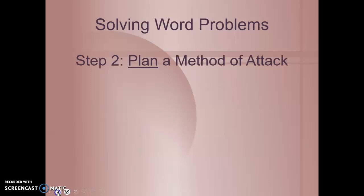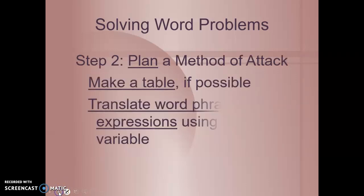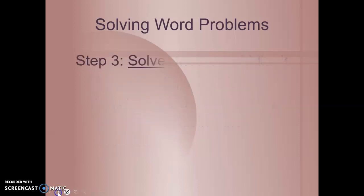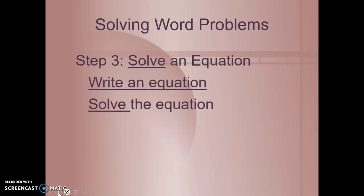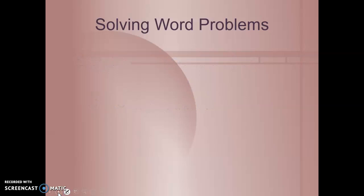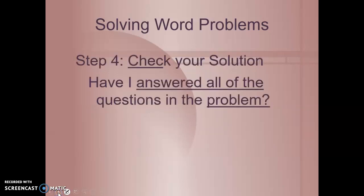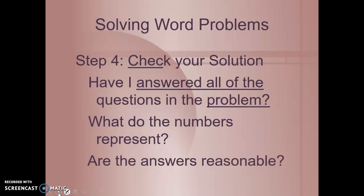After we've done that, we'll plan a method of attack. Make a table if possible. And translate word phrases into expressions using the variable. Step 3 is solve the equation by writing an equation and then solving for the variable. Finally, step 4 is check our solution. We'll make sure that we answered all questions in the problem and that our numbers represent logical answers.